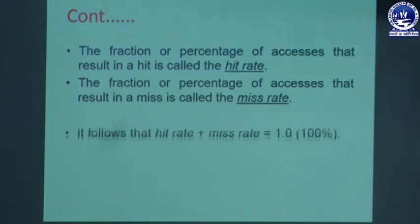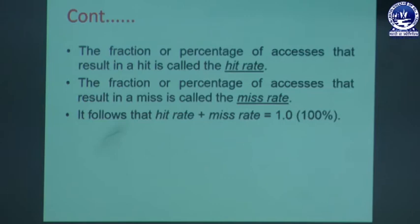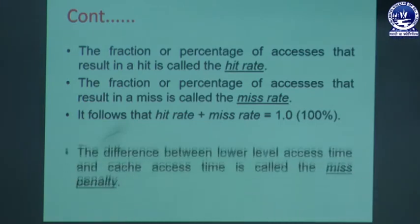It follows that hit rate plus miss rate equals 1.0 in fraction form, and hit rate percentage plus miss rate percentage equals 100%. The miss penalty is defined as the difference between the lower-level access time and the cache access time.